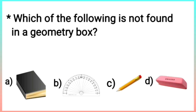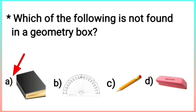Question number 3: which of the following is not found in a geometry box? All of you use the geometry box, so it is very easy to answer this question. In your geometry box, you have a protractor, a pencil, and an eraser. But what you cannot find in your geometry box is a book. So the correct answer is option A.